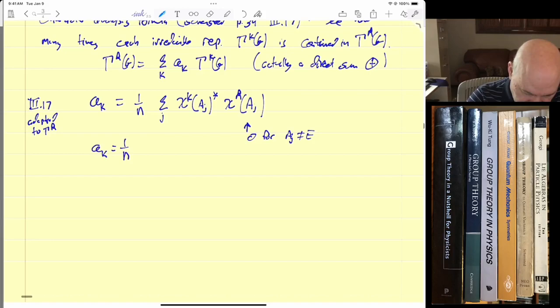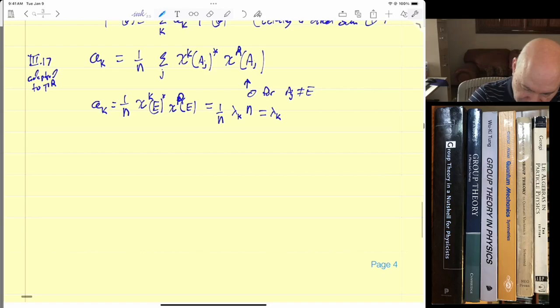Now since this is 0, Chi R A_J is 0 for A_J unequal to E, we have only one term. So we get A_K is equal to 1 over N, Chi K E star, Chi R E. And this is equal to 1 over N. The character of any rep on the identity element is always the dimension of the representation, Lambda K. The character of the identity is also the dimension of the representation. And the regular representation is dimension N. And it's N as we established. It's equal to Lambda K.